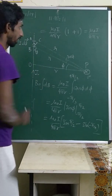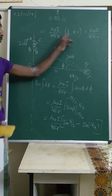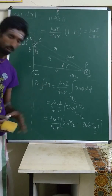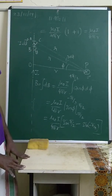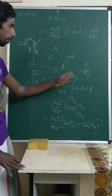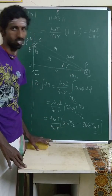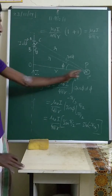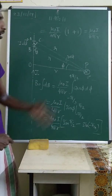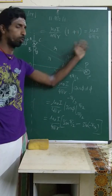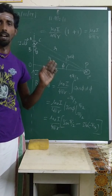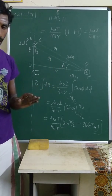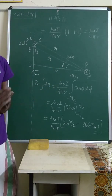The 2 and the 4 simplify, giving the final result: B = μ₀·i / (2π·r̄). For an infinite straight current-carrying wire, the magnetic field at a perpendicular distance r̄ from the wire is μ₀·i / (2π·r̄).